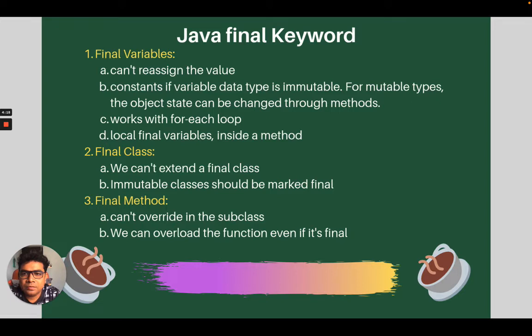Now in Java, when we use final with variable, anyone cannot reassign the value to that variable. It acts as a constant, so if variable data type is immutable, for immutable types, the object state can be changed through the methods. It works with for each loop, local final variables inside a method can be used.